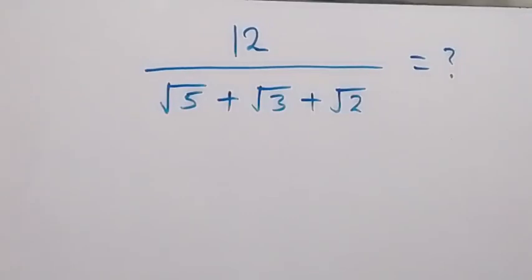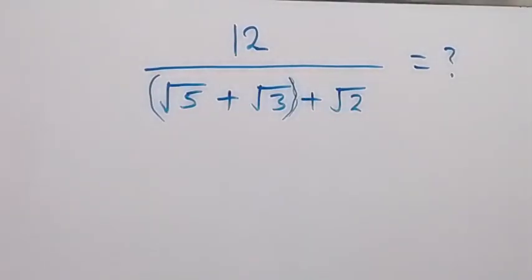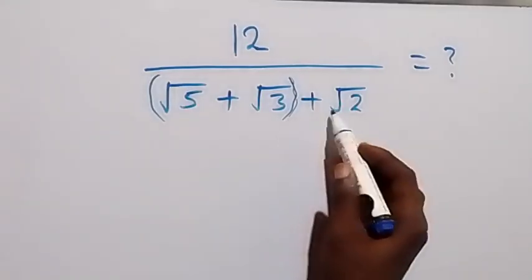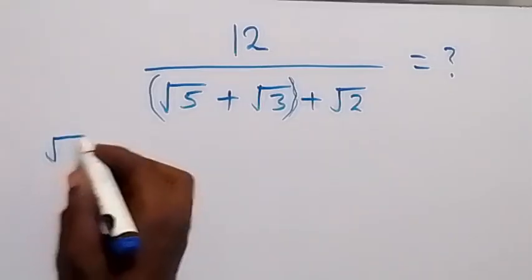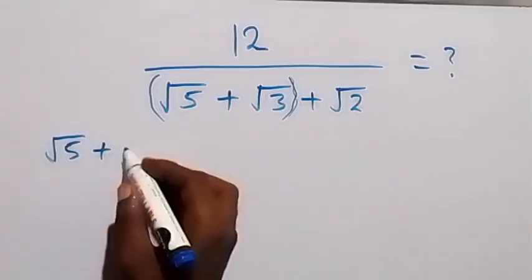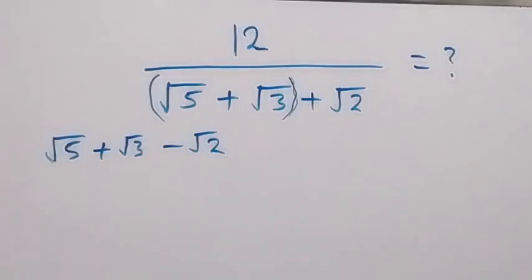Hello, you are welcome. How to solve this nice math problem involving roots. From here we have 12 divided by root 5 plus root 3 plus root 2. Assuming we group these two together, we cannot write the conjugate of this directly. So the conjugate of the denominator will be root 5 plus root 3 then minus root 2. So this will be the conjugate, then from here we can multiply and divide by the conjugate.